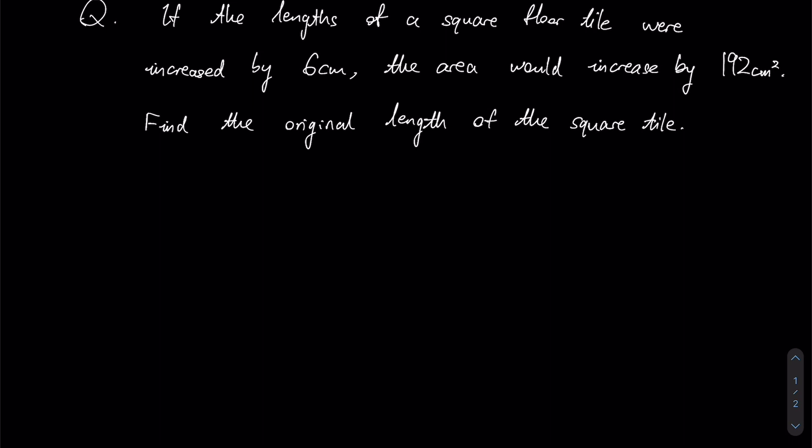So let's look at the question. If the lengths of a square floor tile were increased by 6 centimeters, the area would increase by 192 centimeters squared. And we are supposed to find the original length of this square tile.